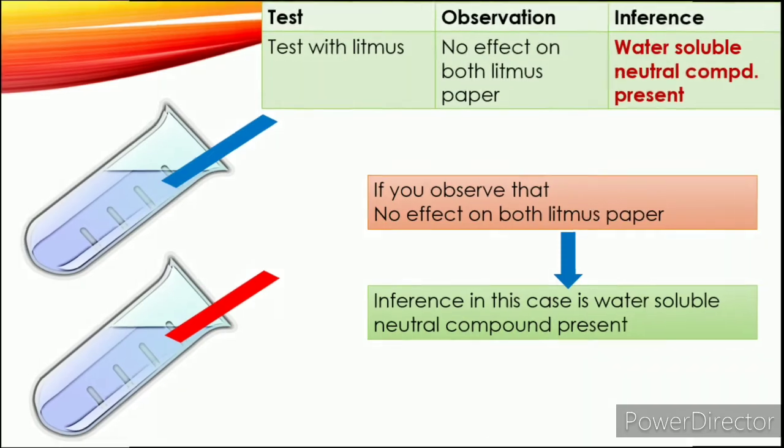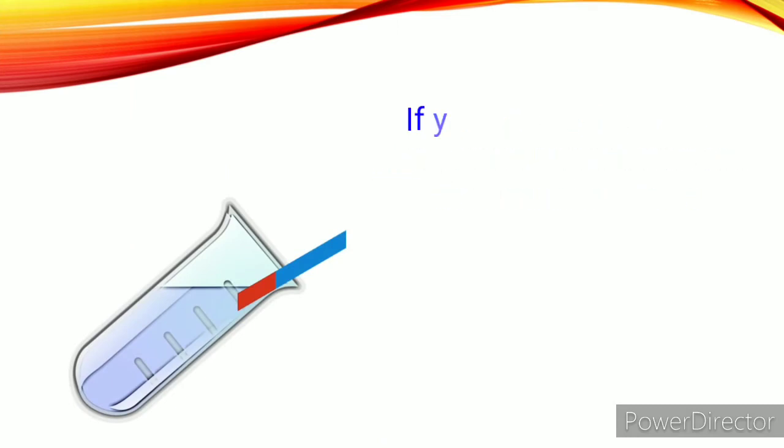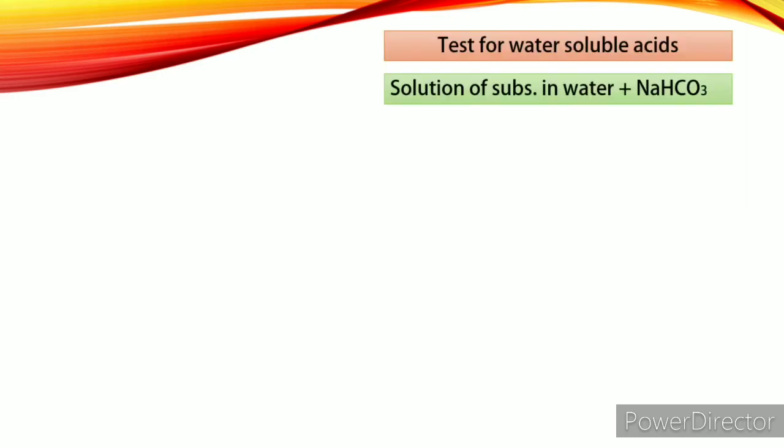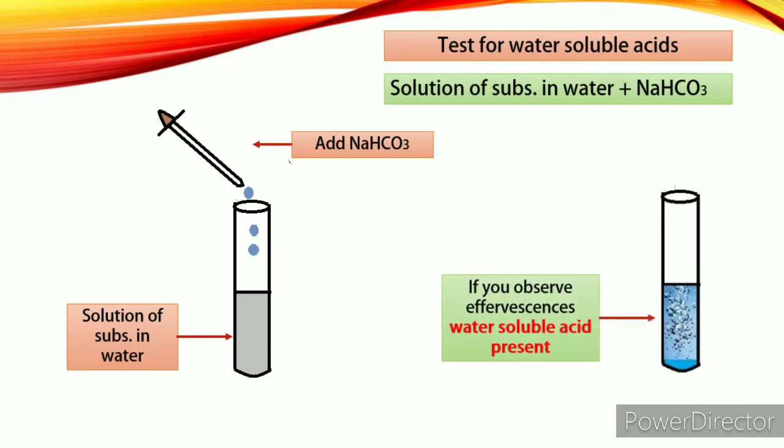When you take litmus test, if your observation is that blue litmus paper turns red, then you have to take two more tests to find out whether your compound is water soluble acid or phenol. So first test your solution with sodium bicarbonate. Add sodium bicarbonate to solution. If you observe effervescence, you will say that water soluble acid present. But in case there is no effervescence, you will take next test.